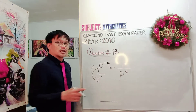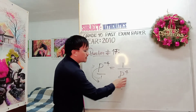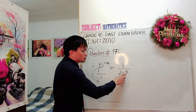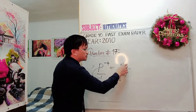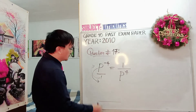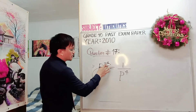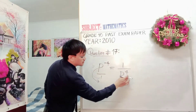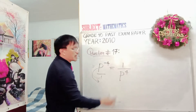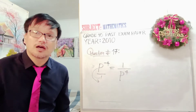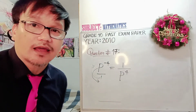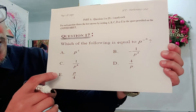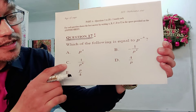On the other hand, if the power or index is negative in the denominator, you can bring it up to the numerator to make the index positive. However, in this given, our P to the power of negative 4 is in the numerator, so to make this index expression positive, all you need to do is bring it down to the denominator and the power becomes positive. That is one of the rules of indices. So from that working out, the answer is letter C: 1 over P to the power of 4.